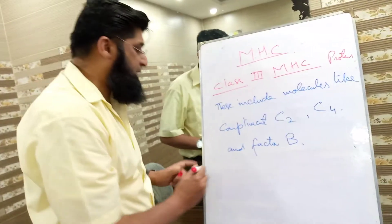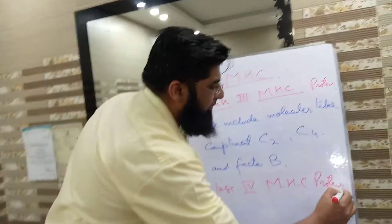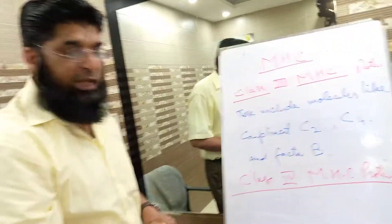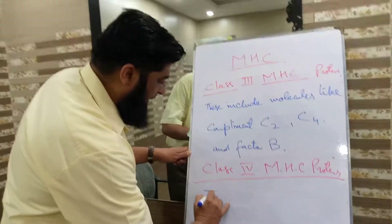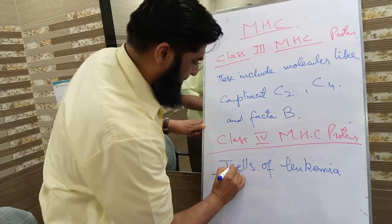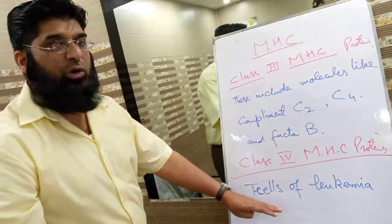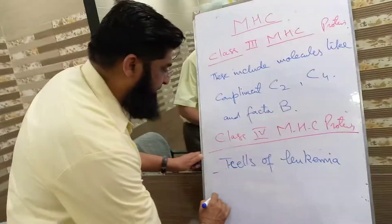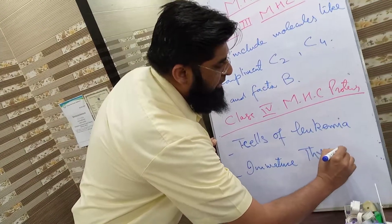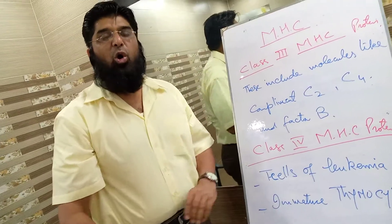Now we move towards class 4 MHC protein molecules. Class 4 MHC proteins are located on T cells of leukemia and on major thymocytes.